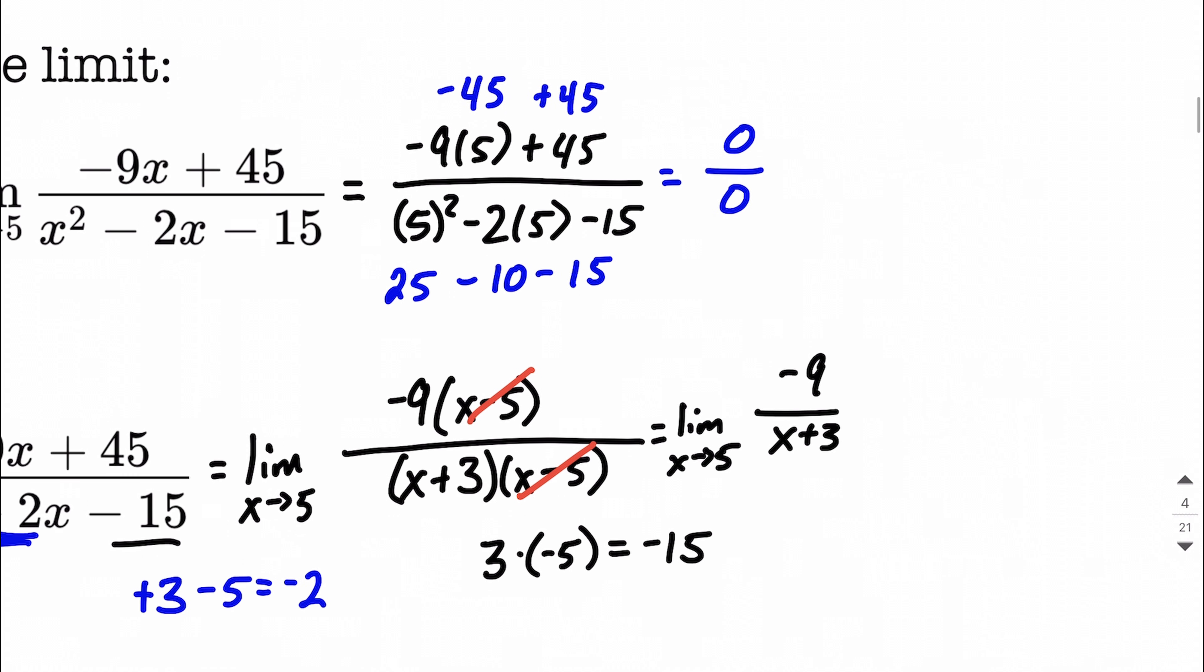To finish this up, what we need to do is, again, evaluate our variable at that value of x. So we end up with negative 9 over 5 plus 3. The 5 gets filled in for the x, which will result in negative 9 over 8, and that's our limit.